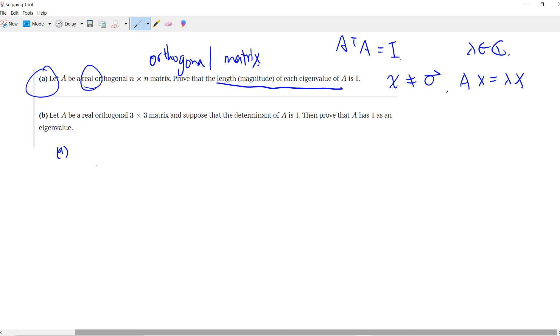So part A is very easy, right? Because A x is lambda x, we can multiply both sides by A transpose. So A transpose A x is lambda A transpose x. Then we can do the same thing here by multiplying by x transpose.